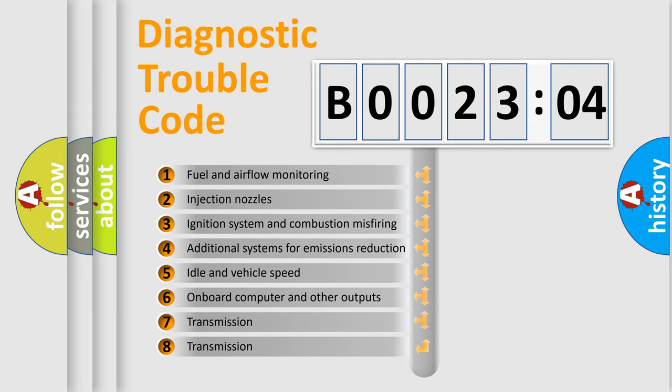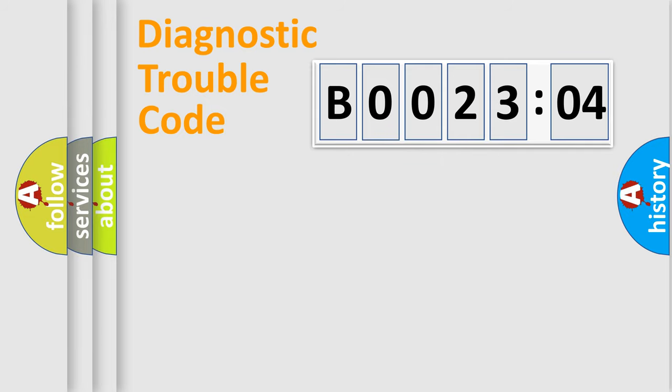The third character specifies a subset of errors. The distribution shown is valid only for the standardized DTC code. Only the last two characters define the specific fault of the group.